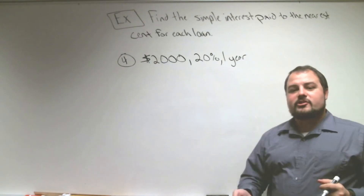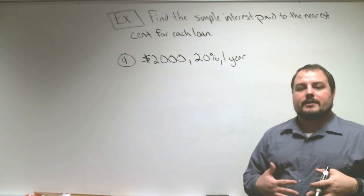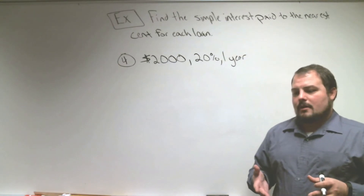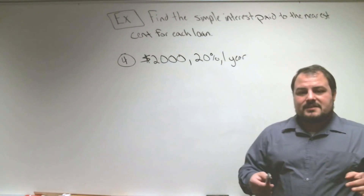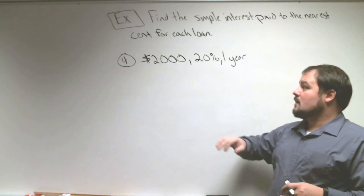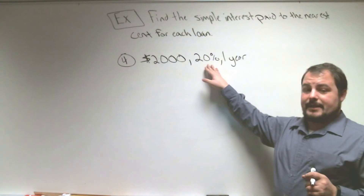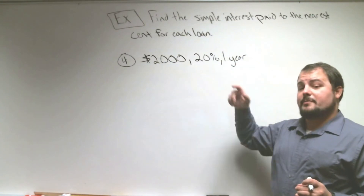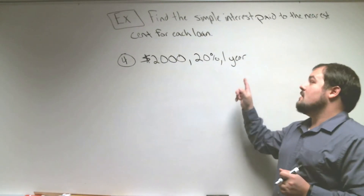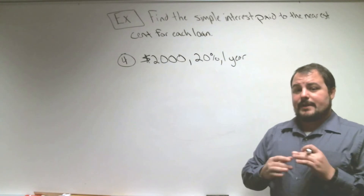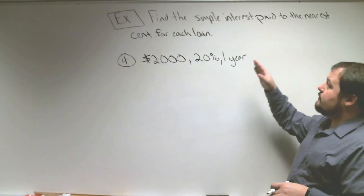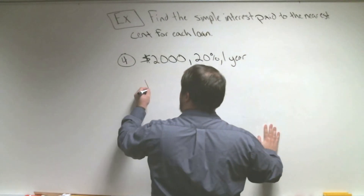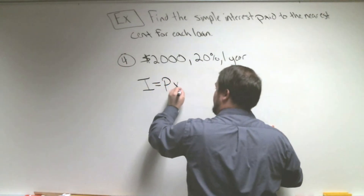In our last example, we're going to talk about loans, because sometimes when you borrow money from a bank or another lender, you have to pay an interest rate on the amount you borrow. Let's say we borrow $2,000 from a bank at an interest rate of 20%. We pay them 20% back on top of the $2,000 — we still have to pay back the $2,000, but we also pay an additional 20%. This 20% is for a one-year loan. We need to find the simple interest paid, to the nearest cent.